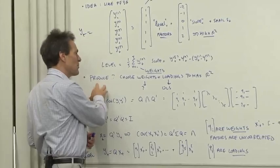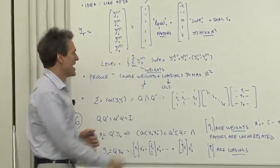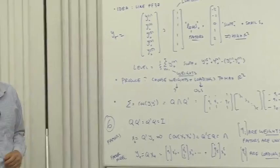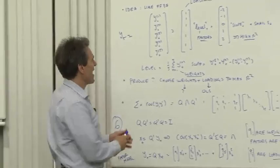And so the mathematical problem is, how do you choose the weights, the way you form factors from the data? How do you choose the loadings, the way you have each bond move when a factor moves, in order to maximize the R-squared of the factor model? That's a simple mathematical problem, and it has the following mathematical answer.